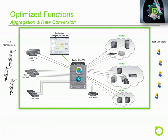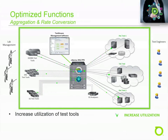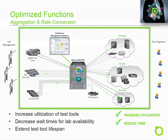Next, let's look at how aggregation and rate conversion can help optimize a service-oriented lab. Using the aggregation and rate conversion functions, lab managers can increase utilization of test tools by using lower-speed tools for higher-speed tests. In this example, there are not enough 40-gigabit test tool ports to meet the current demand. Rather than wait for these ports to become available, the lab manager can make use of unused 10-gigabit tool ports instead in order to meet the current demand for those 40-gigabit tests. In addition to increasing utilization and decreasing wait times, aggregation and rate conversion can greatly extend the useful lifespan of expensive test tools, thereby postponing or eliminating the need for additional expenditures.